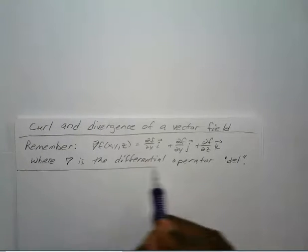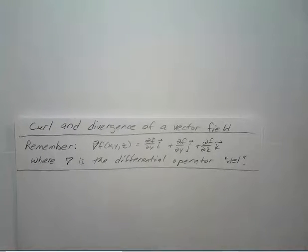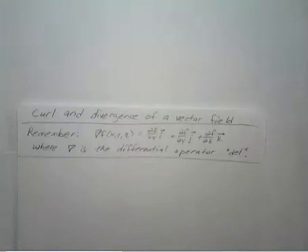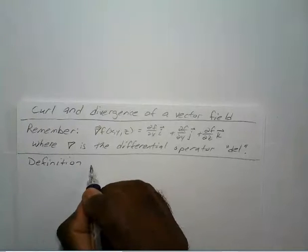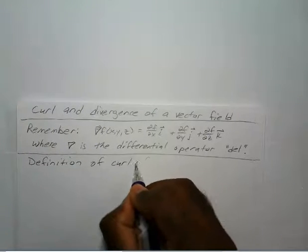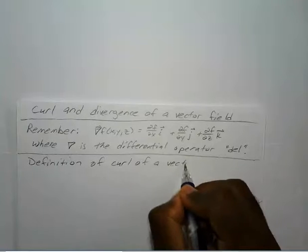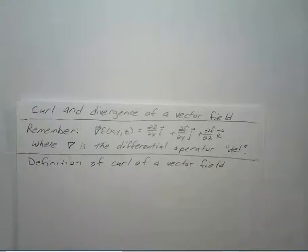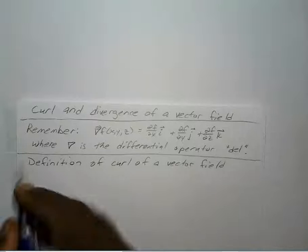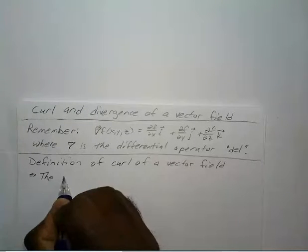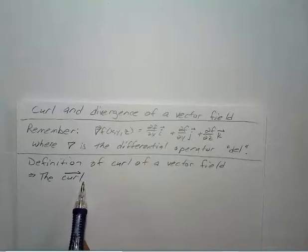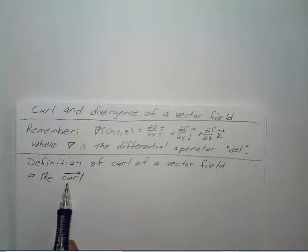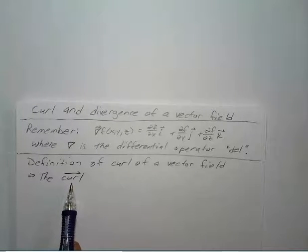So just that quick reminder, now we can jump right into the definition of curl of a vector field. The curl — I'm putting a little arrow over curl because in most textbooks and programs it's in bold print, the same way a vector would be. I'm just putting the arrow over it to show that it would show up in bold print.